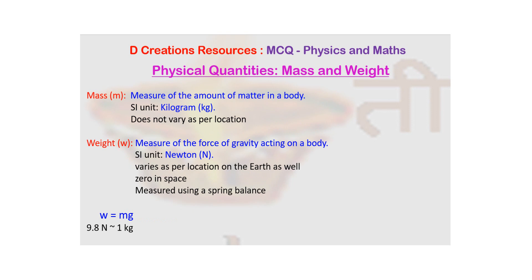We know that the earth is not an exact sphere, so depending on whether you are standing at the North Pole or at the equator, the weight is going to differ. It will be zero in space, simply because g is zero. There is a relationship between weight and mass: mass is m, weight is w, and w equals m into g, where m is mass and g is acceleration due to gravity.